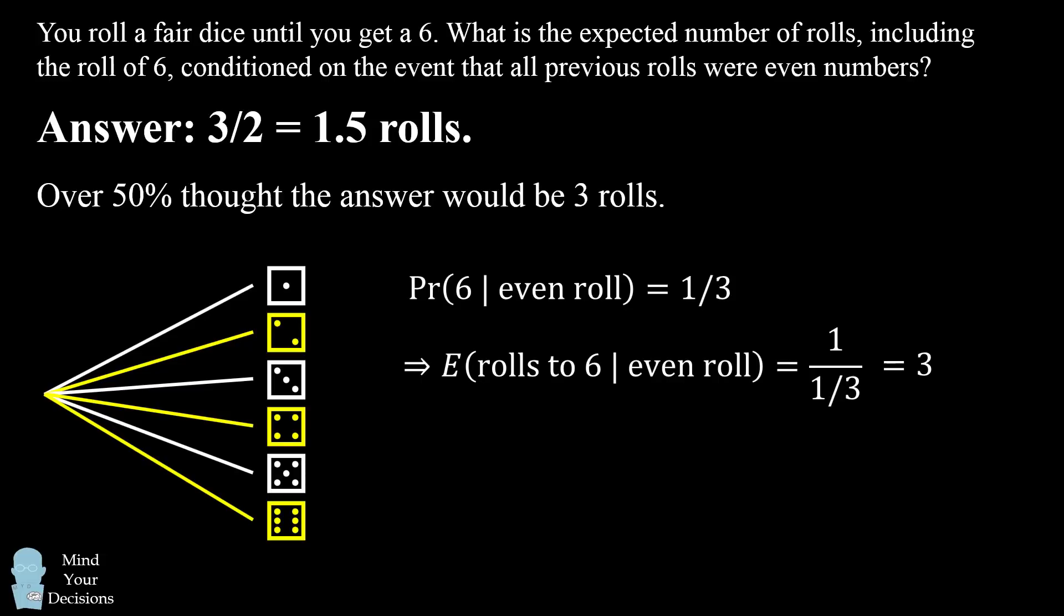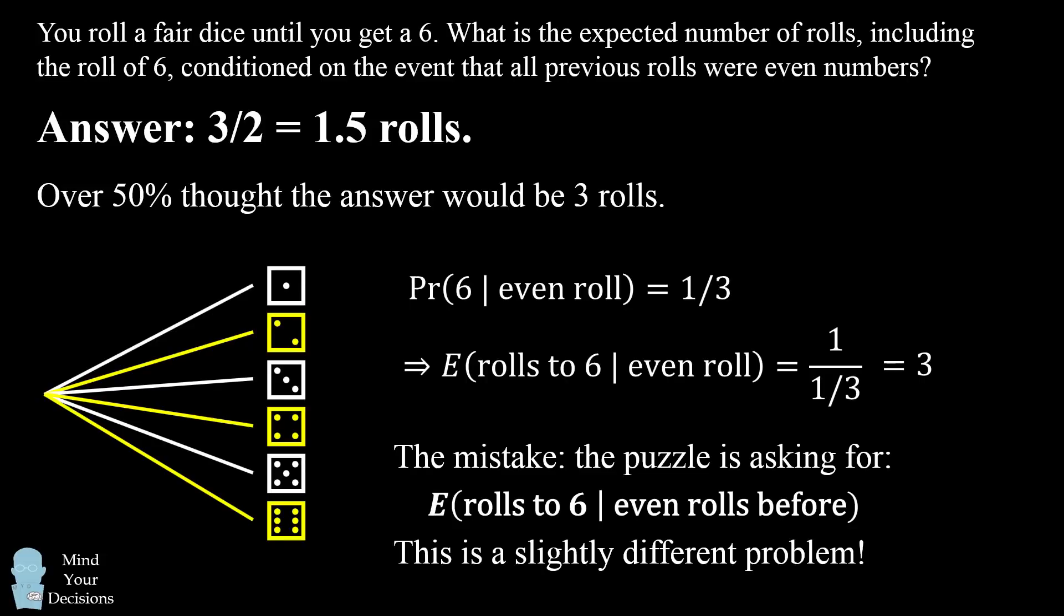And the probability of rolling a 6, given that it's even, is 1 out of these 3 possibilities. So they use the logic that the expected number of rolls to a 6 given an even roll would be the reciprocal of this, which is 1 over 1/3, and that would be 3 rolls. But this is not the correct answer because the puzzle is asking for a slightly different question. It's asking for the expected number of rolls to 6 given that there are even rolls before the 6. This is a slightly different question, and I'm going to show you why the answer is 1.5.